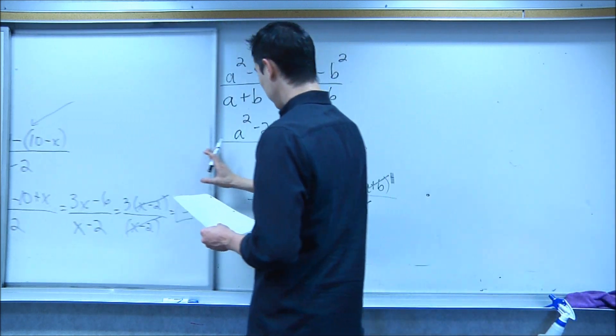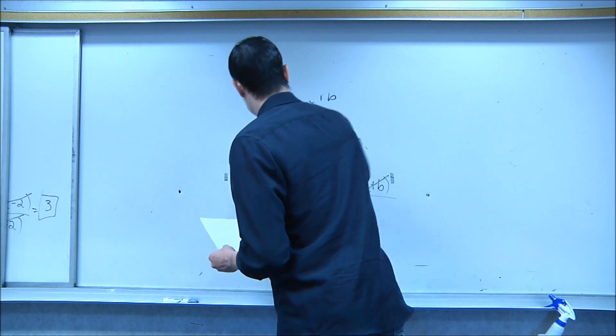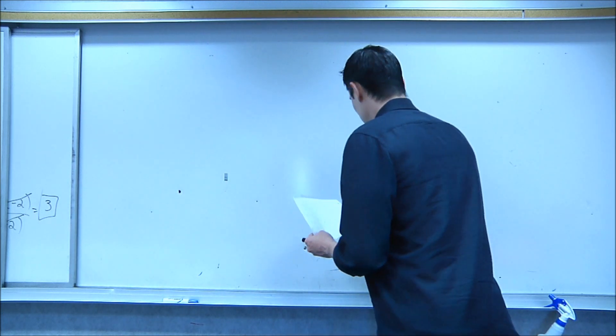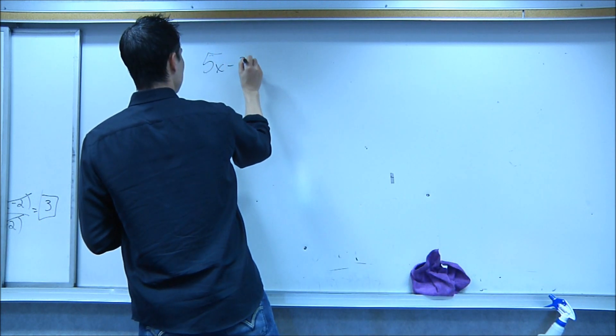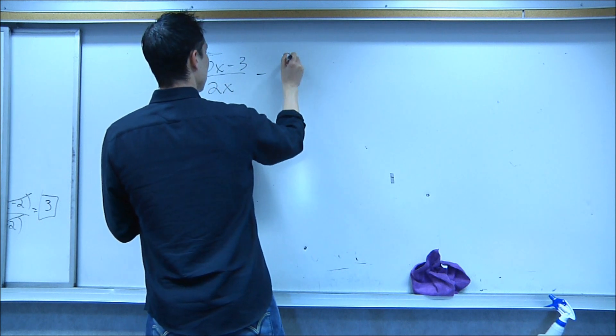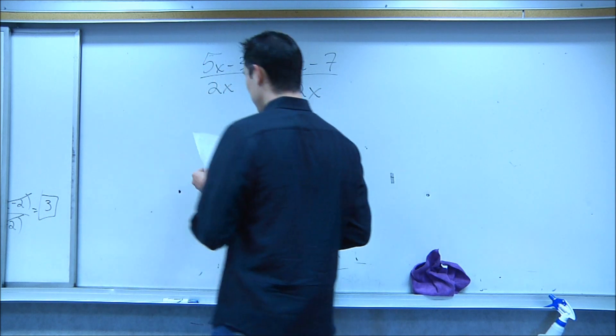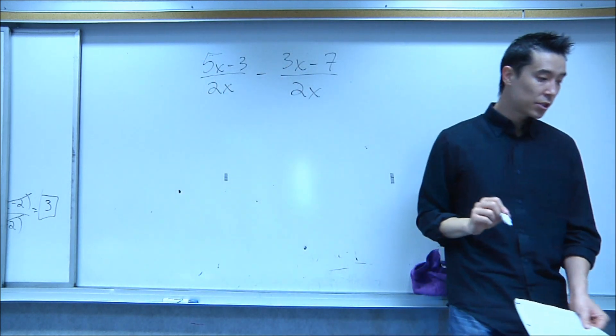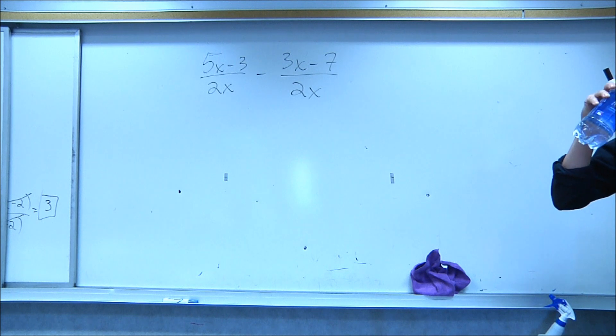Okay, let's try this one. 5x minus 3 over 2x minus 3x minus 7 over 2x. Go ahead, do that one. Make sure to distribute that minus sign. Distribute that minus sign, get it to a single fraction, and then factor it.